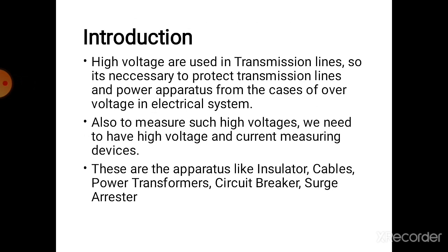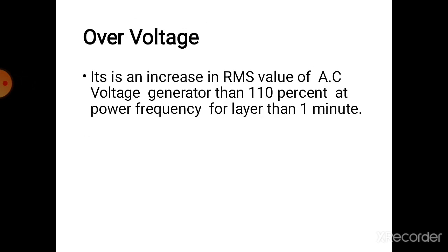It is also necessary to measure high voltage and current. Apparatus involved include insulators, cables, power transformers, circuit breakers, and surge arresters. Overvoltage is a voltage that exceeds the maximum value of operating voltage in the electric circuit, and it increases the RMS value of AC voltage greater than 110 percent of power frequency for more than one minute.